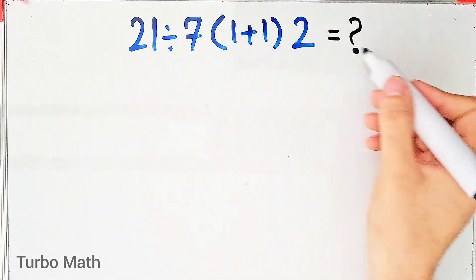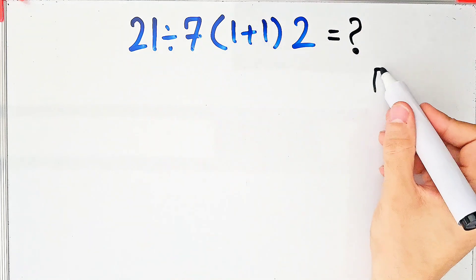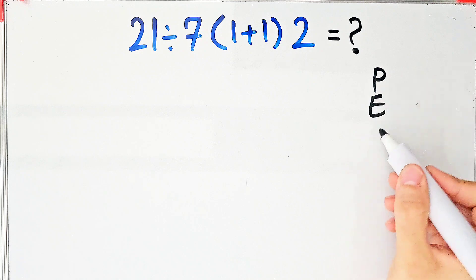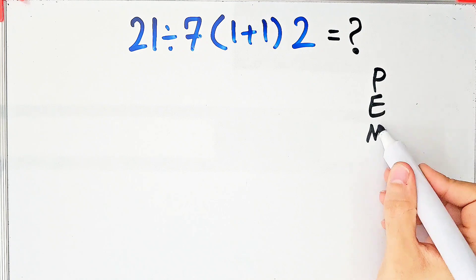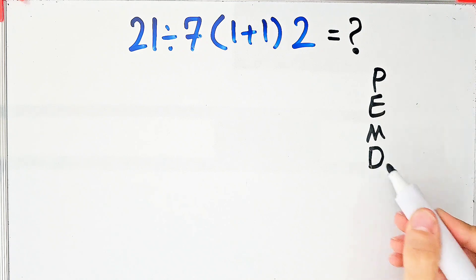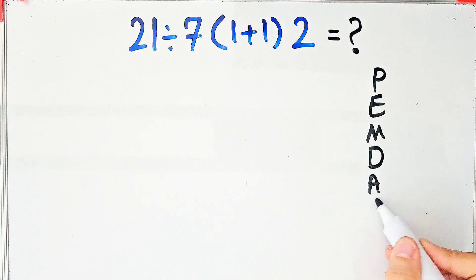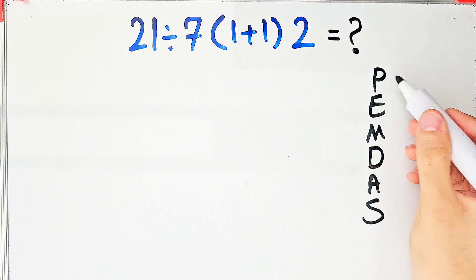To solve this question, we need to follow the order of operations, which is PEMDAS. PEMDAS shows the priority of the mathematical operations, and if you don't pay attention to this rule, you get the wrong answer.